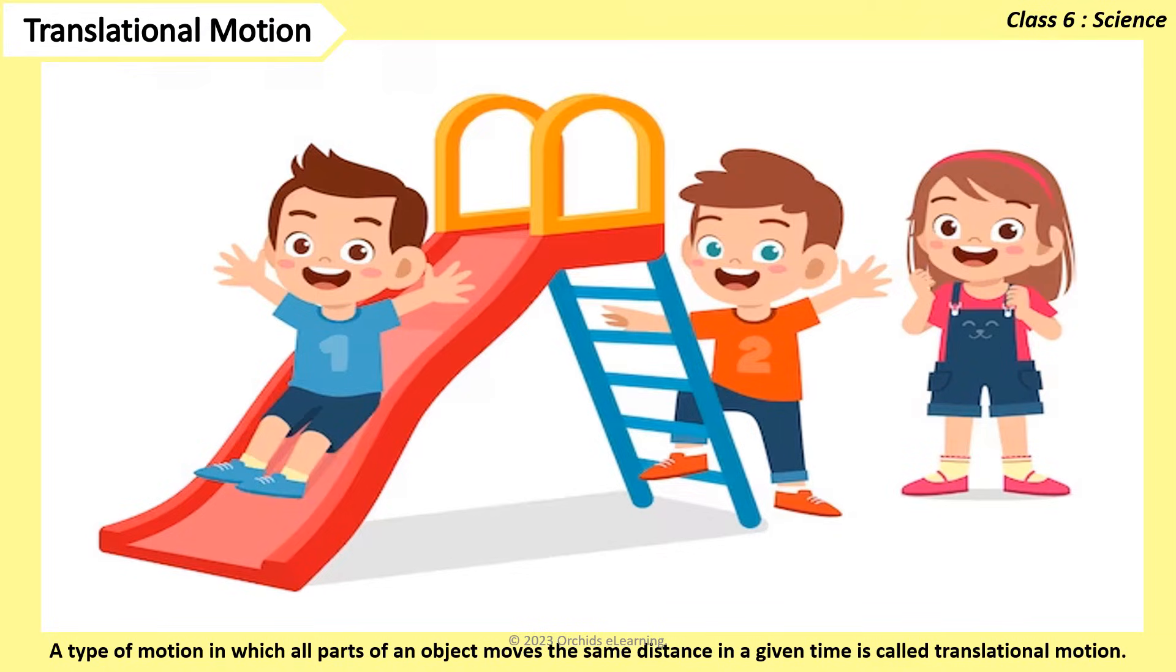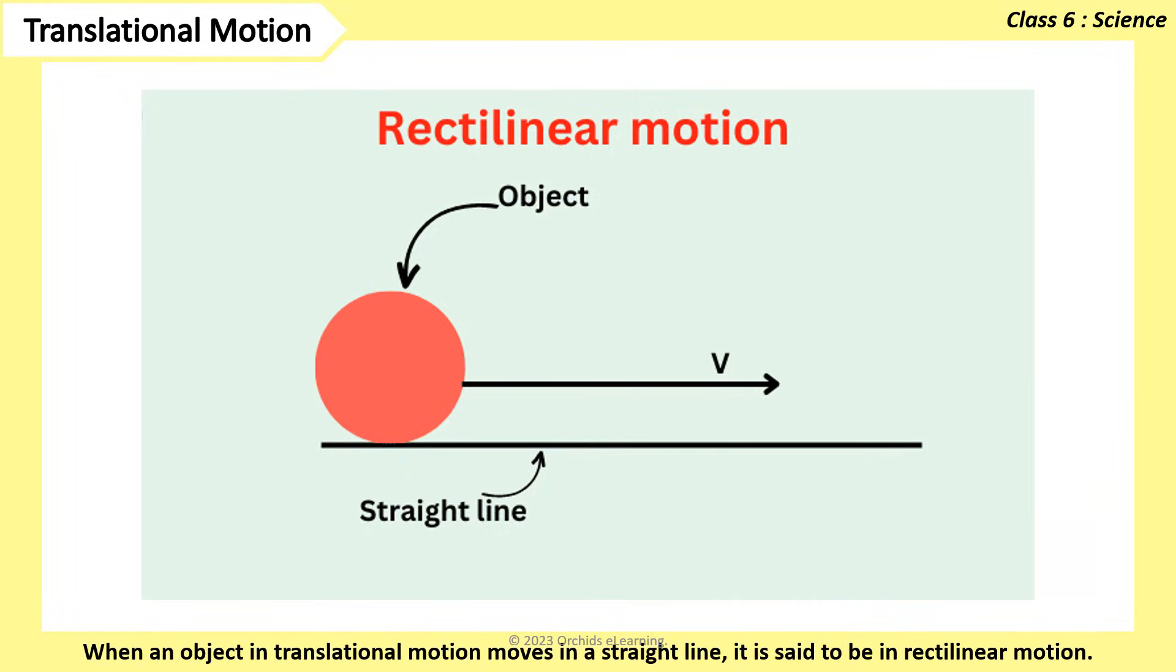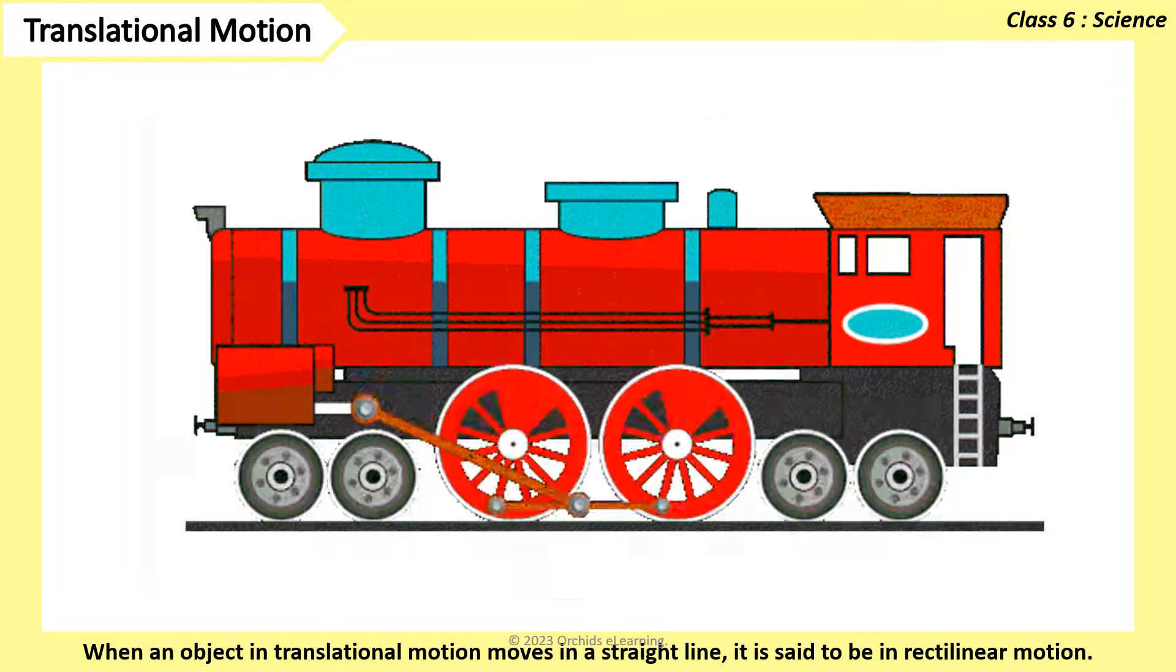There are two types of translational motion: rectilinear and curvilinear. When an object in translational motion moves in a straight line, it is said to be in rectilinear motion. Example, train moving on a straight track.